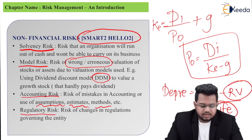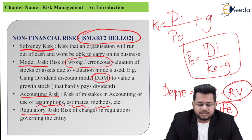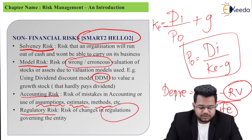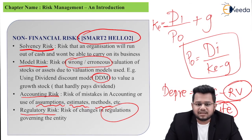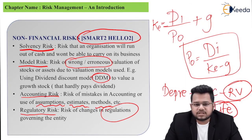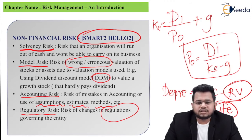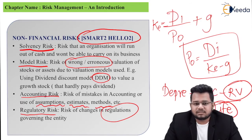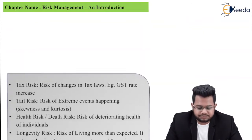R stands for regulatory risk — the risk of changes in regulations governing that entity. For example, there are regulations for banks, NBFCs, and insurance companies. If those regulations change and have some adverse effect, that is a regulatory risk.